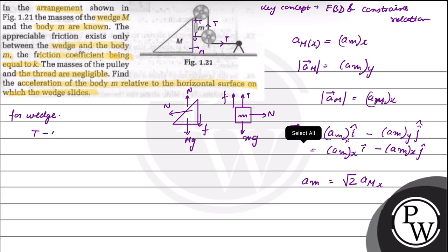For wedge, tension minus normal is equal to M capital M A acceleration of M in x direction. For body, normal is equal to small m acceleration of capital M in x direction because small m_x is equal to capital A M_x. mg minus tension minus friction is equal to small m A capital M_x.